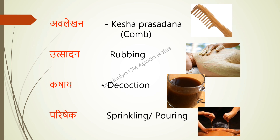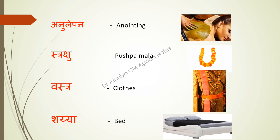Next is Parisheka, which means sprinkling or pouring — that is by Dhara, etc.; in those medicines also toxins were administered. Next is Anu Lepana, which means anointing — that is Lepana Karma. Next is Thrakshu — Thrakshu means the Pushpa Mala; at that time the Pushpa Mala were used and poison was administered through that mala also.